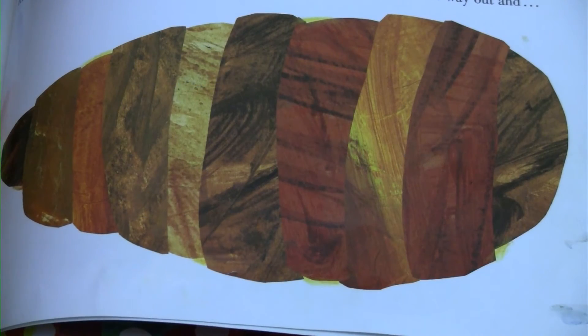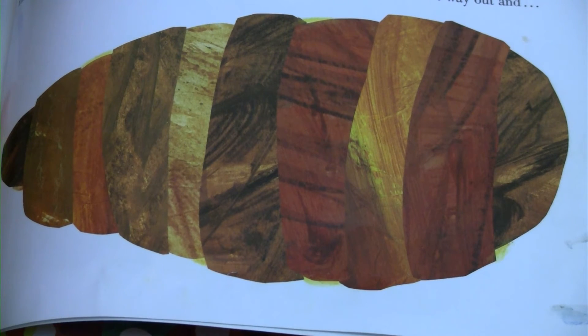He built a small house called a cocoon around himself. He stayed inside for more than two weeks, then he nibbled out a hole in the cocoon, pushed his way out, and he was a beautiful butterfly.